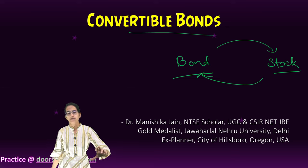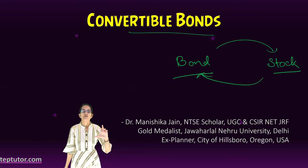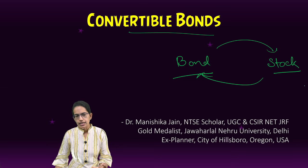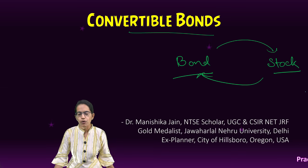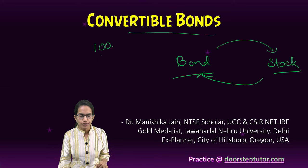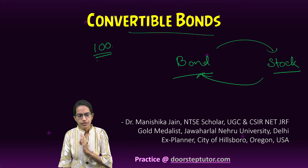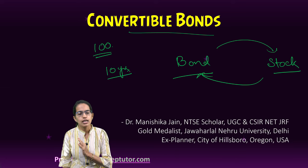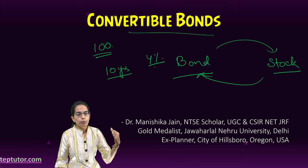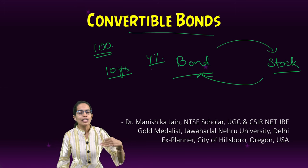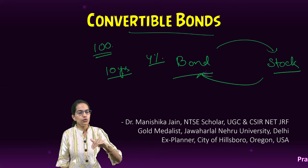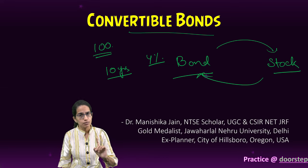A bond, once you have committed for 5 years, 3 years, or 10 years, you would have to hold it. A good example for a convertible bond: let's say I have a bond issued for 100 rupees. I have to hold it for 10 years at 4% interest. That means I will keep getting that 4% interest, and after 10 years I have an option to switch to stock or to keep it as a bond.